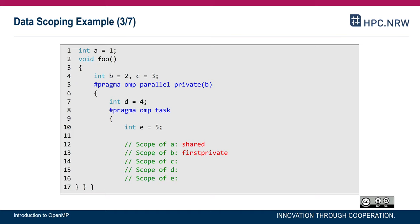What is the difference between b and c? c is declared before the parallel region with no scoping clause, so it remains shared. c is shared within the parallel region and in consequence remains shared — there is only one c accessible by all threads and tasks.